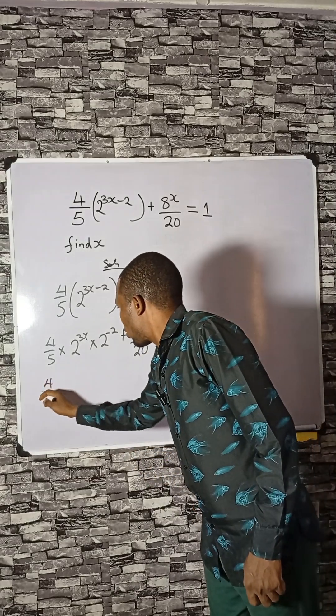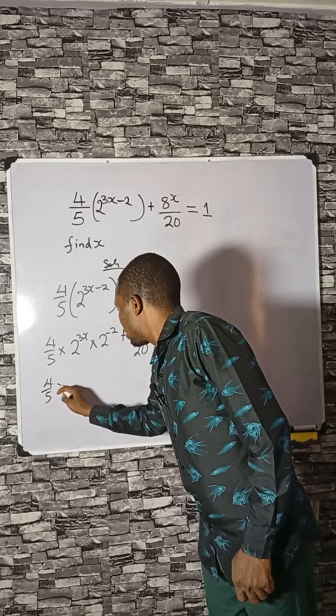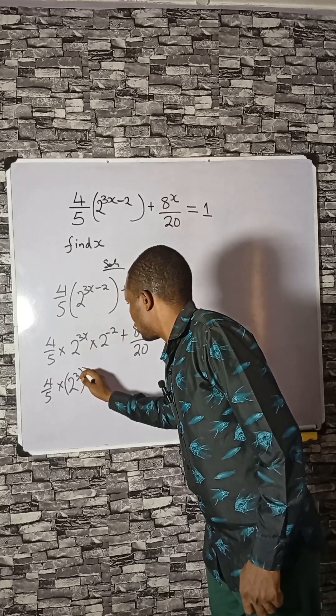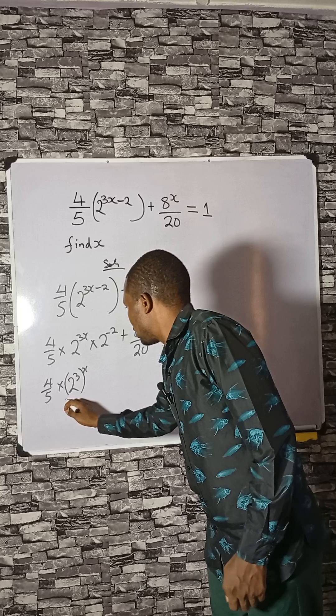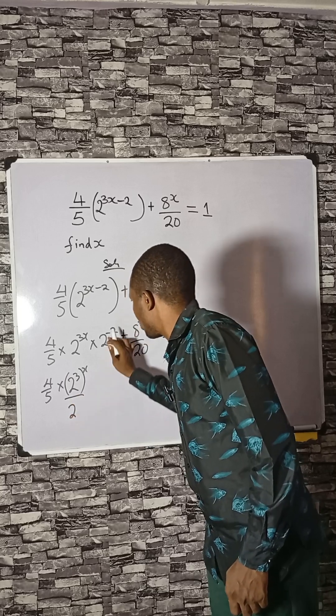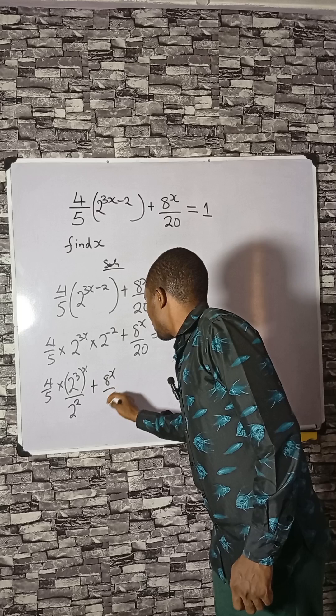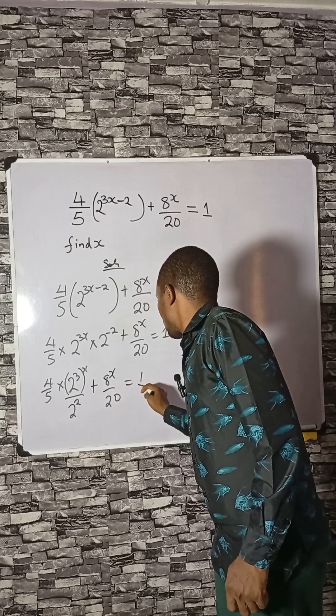So 4 over 5 times this can be written as 2 cubed to the power x, then divided by 2 squared - that will take care of the minus sign - then plus 8x divided by 20 equals to 1.